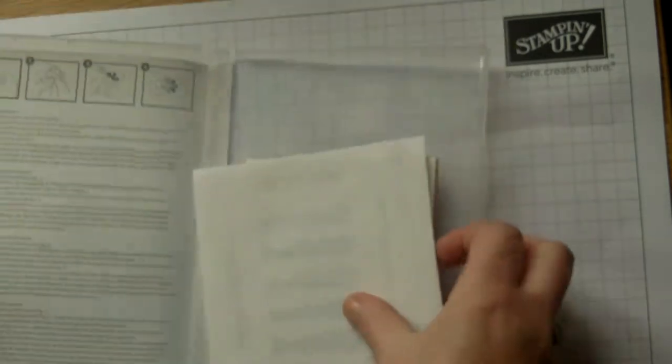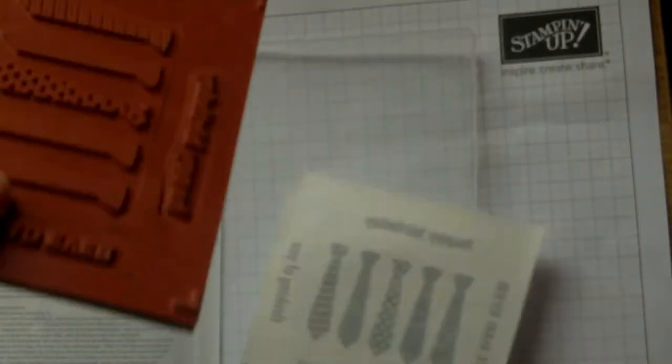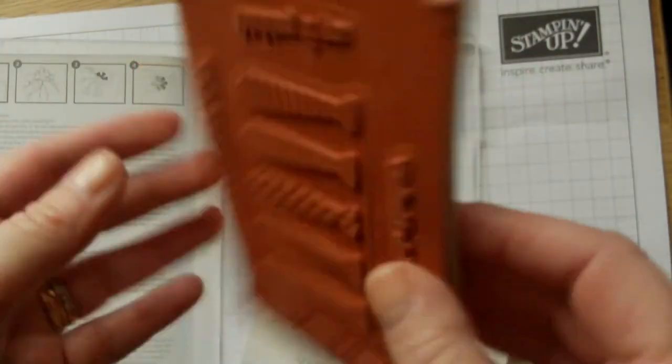So basically you just open it up and inside you will receive the sticker sheet and then you will receive the actual rubber with the stamps.